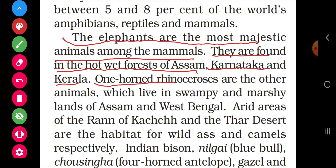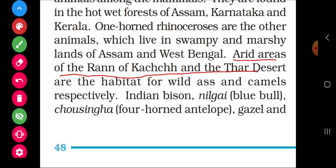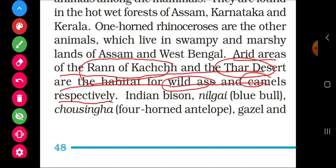One-horned rhinoceros are other animals which live in the swampy and marshy lands of Assam and West Bengal — the wetland areas of Assam and West Bengal. The arid areas of Rann of Kutch in Gujarat are the habitat for wild ass, and camels are found in the Thar Desert of Rajasthan.